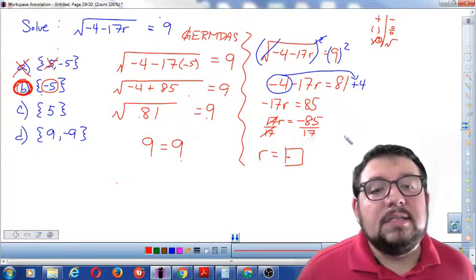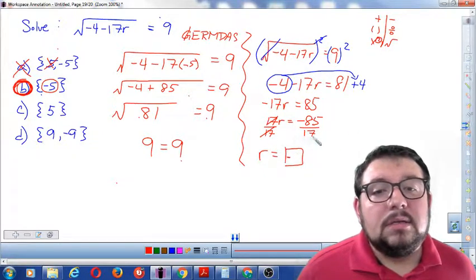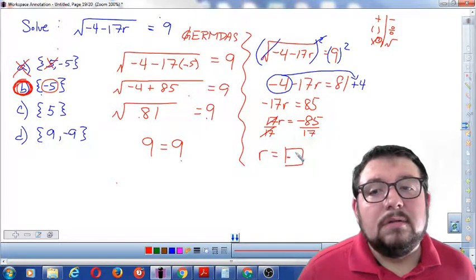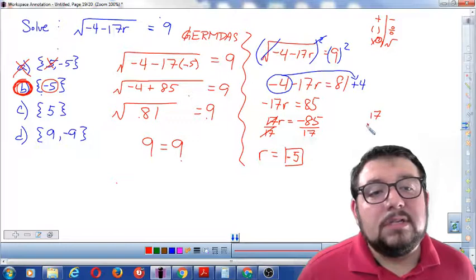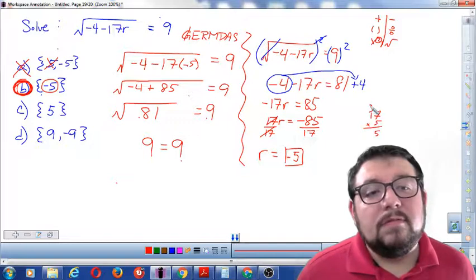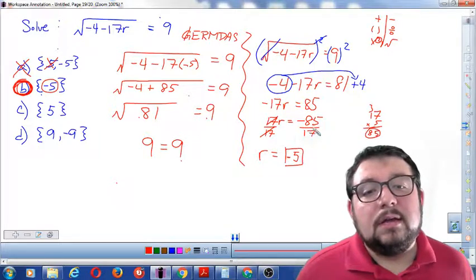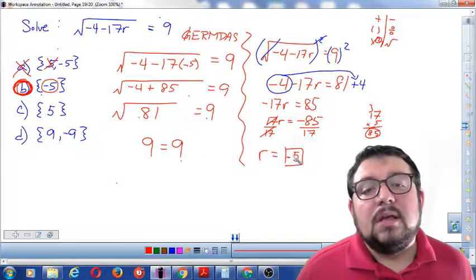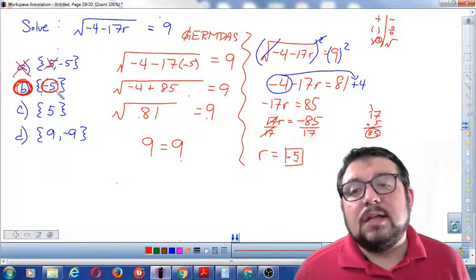And now I have r equals negative and positive makes negative. And 85 divided by 17 is actually 5. You can check that out if you want. 17 times 5. 5 times 7 is 35. And 5 plus 3 is 8. So that's how I got that. 85 divided by 17 is negative 5. And you can see that that's exactly the answer we got.